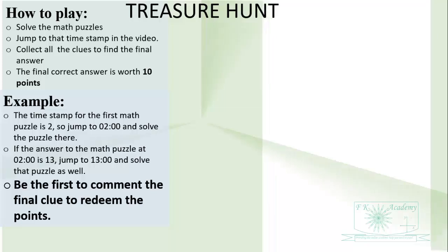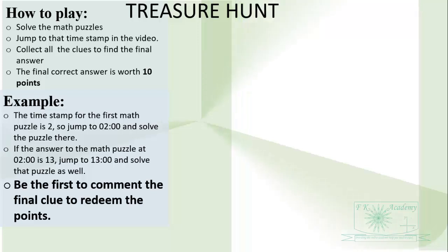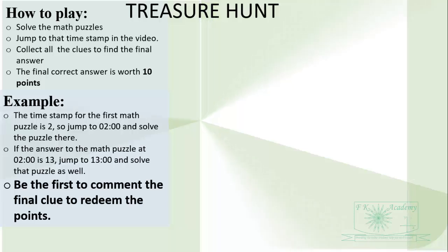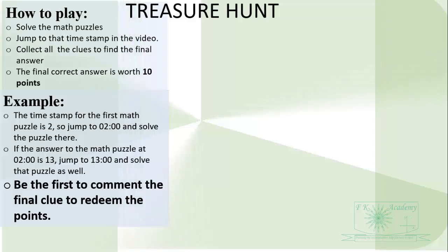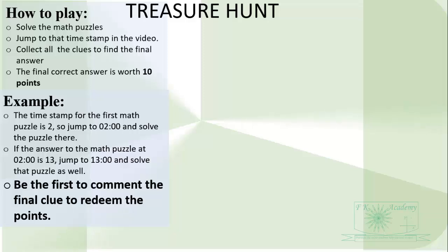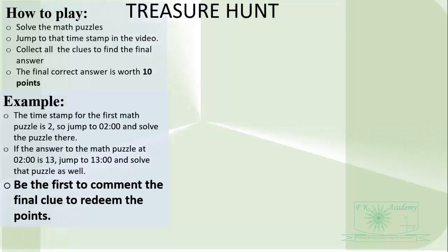If it is 2, write down 2. If it is 5, write down 5. If it is 13, write down 13. Then go to the timestamp at 13 to find your next math puzzle and solve that one too. If the answer is 5, write 5. If the answer is 8, write 8. So if your first answer is 13 and the second one is 8, then your updated answer will be 1-3-8. If the first answer is 13 and the second one is 11, then your updated answer will be 1-3-1-1.